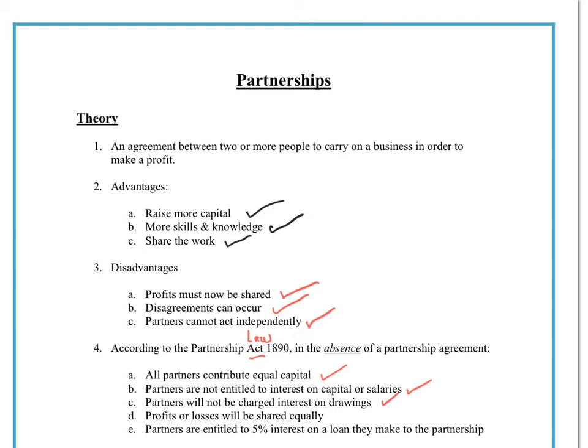What do we mean by interest on drawings and interest on capital? A partnership is very different to a sole trader, because with a sole trader you are the business — everything you do is down to you. With a partnership, if you draw money out, you're effectively taking a part of someone else's money. So imagine you had a dollar bill: if you take 60 cents out as a drawing and you've only contributed 30 cents, then the other 30 cents actually belongs to one of your partners. So to discourage people drawing money out that doesn't actually belong to them, we usually charge an interest on any drawings.